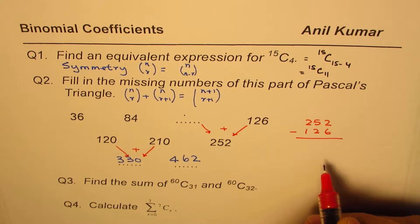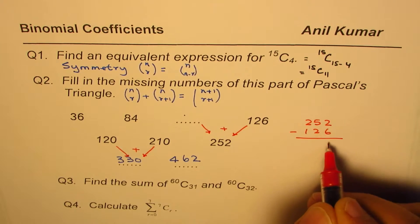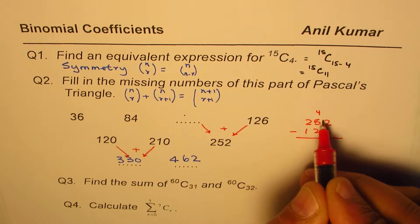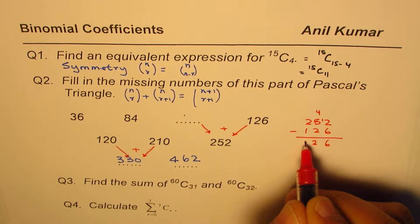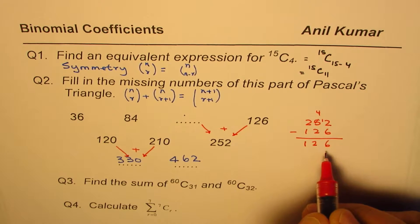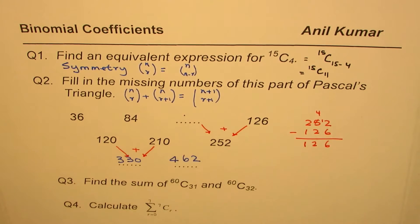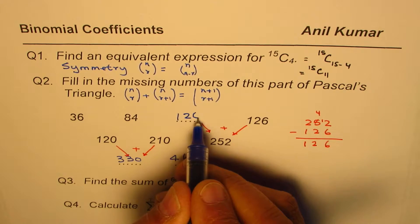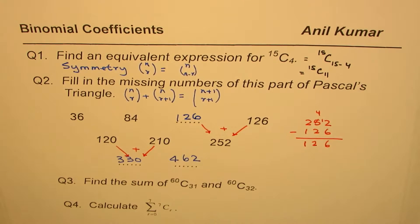So that is the number we are looking for. You can borrow and then do it. So this becomes 4 and 12 and 2, and that number is also 126. So this number here is also 126. So that is how you can enter the missing entries of Pascal's triangle.